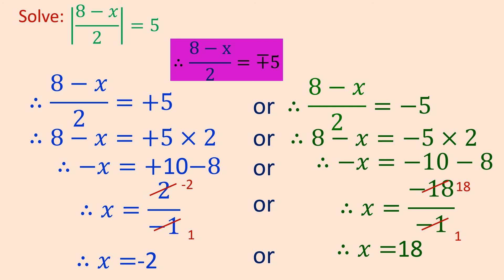So now you have understood, when absolute value of 8 minus x upon 2 equals to 5, the value of x can be minus 2 or 18. Is it clear? See you with the next video.